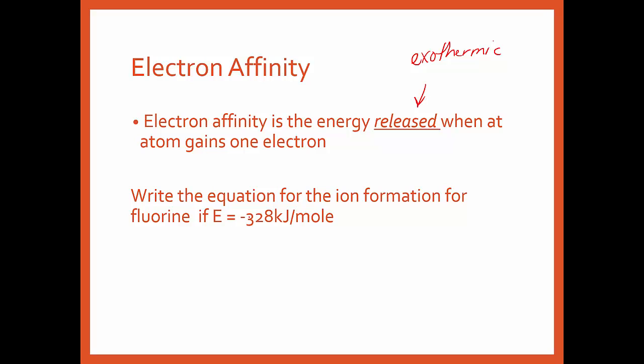When energy is released, we just have it as a negative. That's what this negative means - it's energy given off. If I wanted to write the equation to form an ion of fluorine, well, fluorine will make a negative ion. This is talking about electron affinity forming anions.